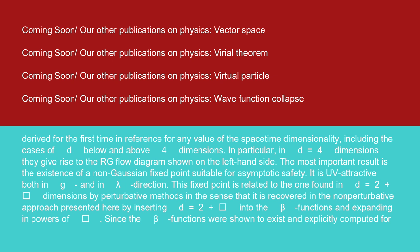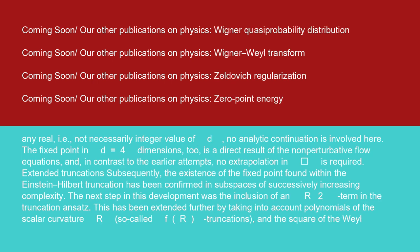In particular, in d equals 4 dimensions they give rise to the RG flow diagram shown on the left-hand side. The most important result is the existence of a non-Gaussian fixed point suitable for asymptotic safety. It is UV attractive both in g and in λ direction. This fixed point is related to the one found in d equals 2 plus epsilon dimensions by perturbative methods in the sense that it is recovered in the non-perturbative approach presented here by inserting d equals 2 plus epsilon into the beta functions and expanding in powers of epsilon. Since the beta functions were shown to exist and explicitly computed for any real, i.e., not necessarily integer value of d, no analytic continuation is involved here. The fixed point in d equals 4 dimensions is a direct result of the non-perturbative flow equations, and in contrast to the earlier attempts, no extrapolation in epsilon is required.